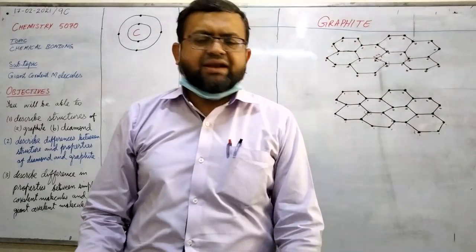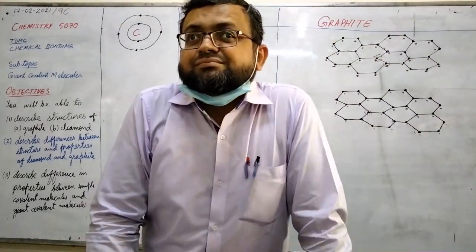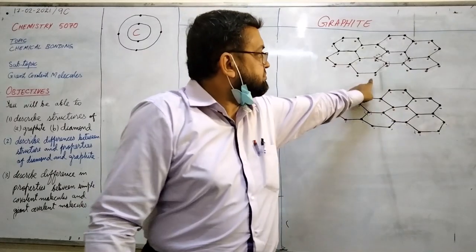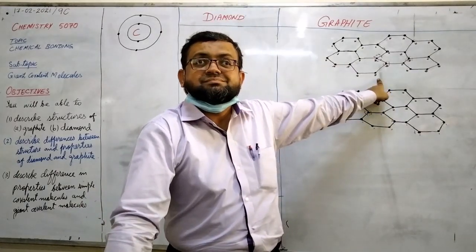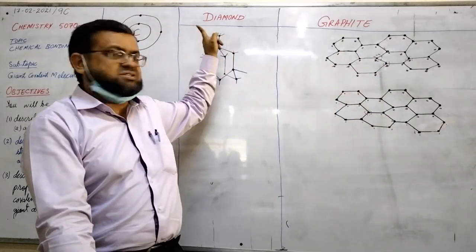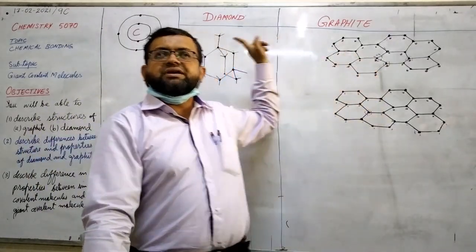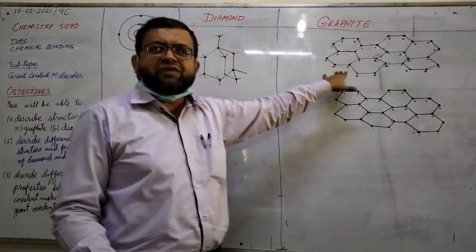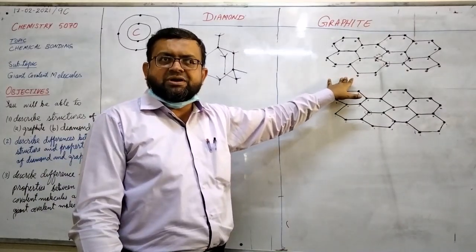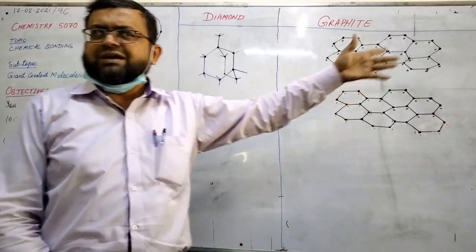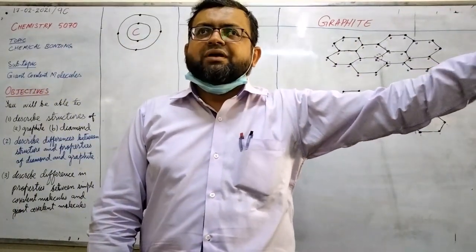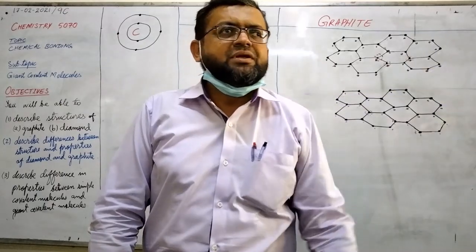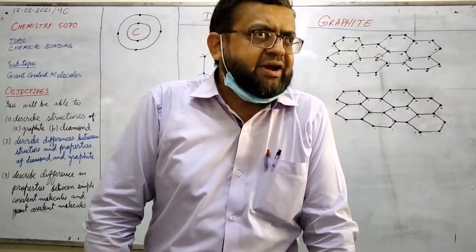Another difference: it has free electrons. If any structure has free electrons, then it can conduct electricity. So it is a good conductor of electricity. It is used as an electrode in different appliances, for example your dry battery cell. And you will learn in class 11, extraction of aluminum - in extraction of aluminum, one of the electrodes is made up of graphite.